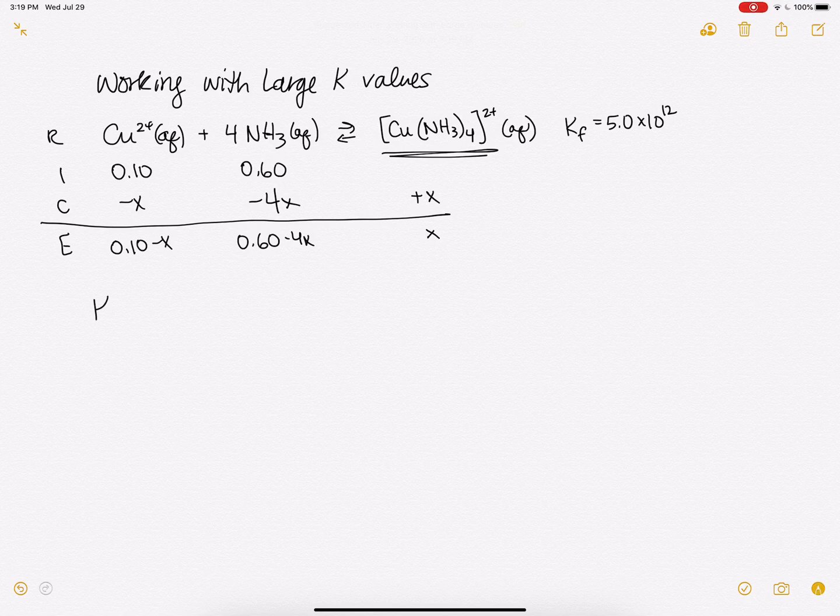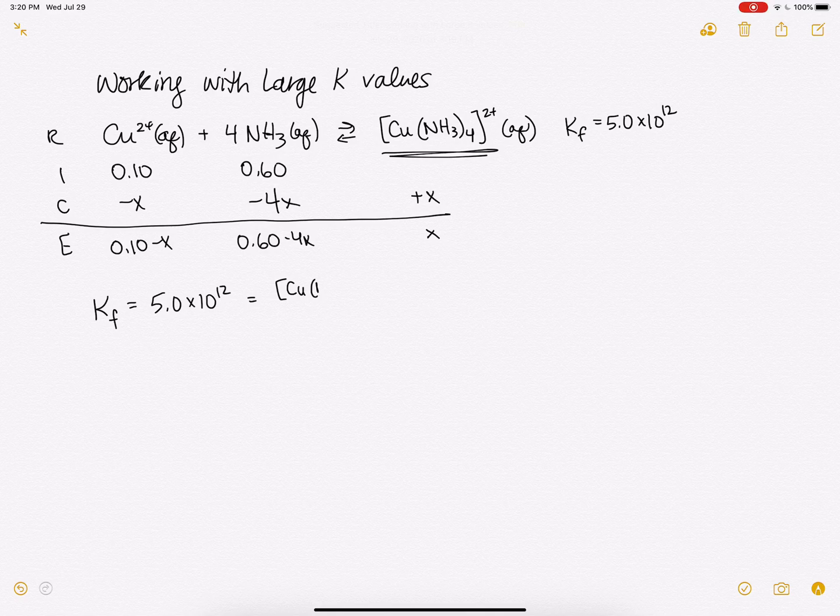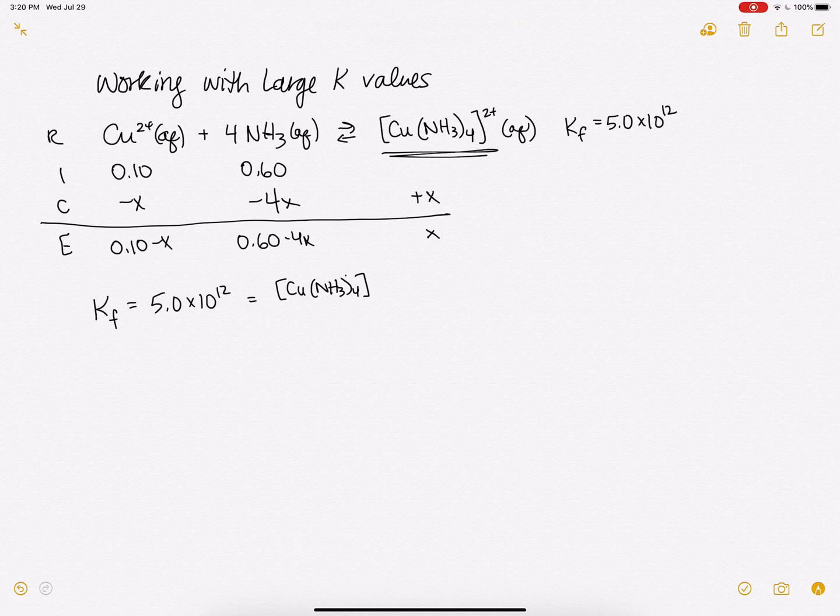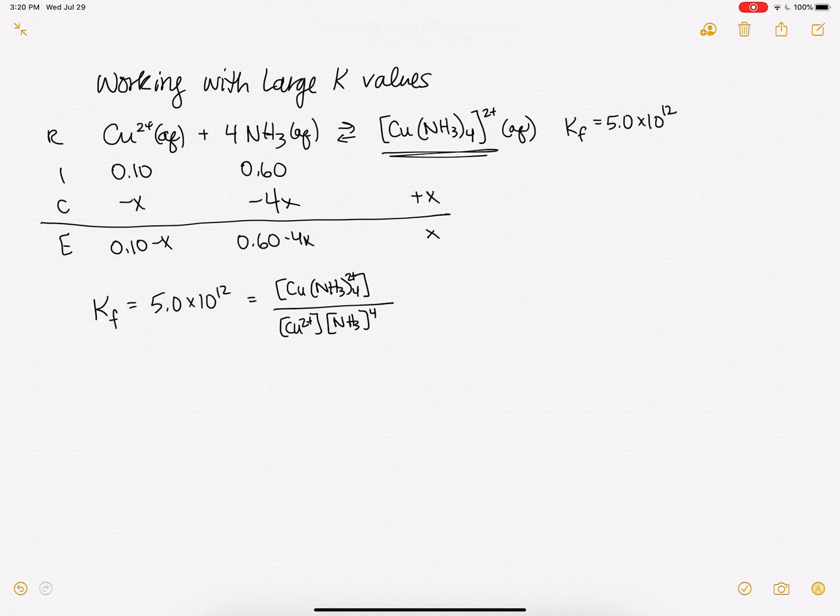Now here's the deal. We can write our expression. We get KF is 5.0 times 10 to the 12th and it's going to be equal to the concentration of Cu(NH3)4 2+ divided by the concentration of copper 2+ times the concentration of NH3 to the 4th power. That's going to be some hard algebra, right?